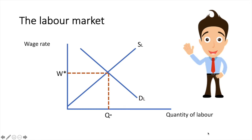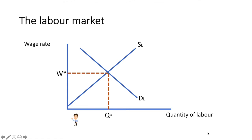Let's go back to our model of the labour market. I've created a hypothetical worker Mike, who will represent one of the workers willing to supply his labour in this market. Mike is eager to work and willing to supply his labour at a wage rate of W1. Since he is actually paid W star, he is paid well above the minimum amount he would be willing to work for. W1 represents his transfer earnings and the difference between W star and W1 is his economic rent.